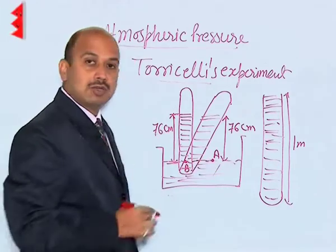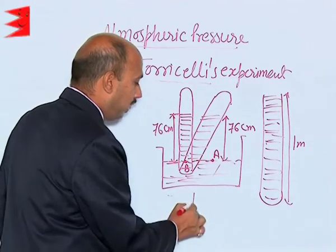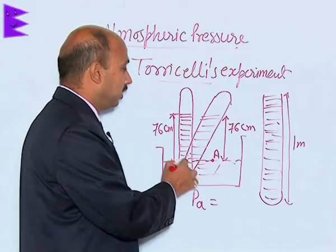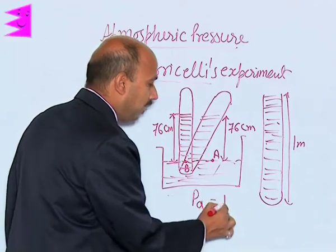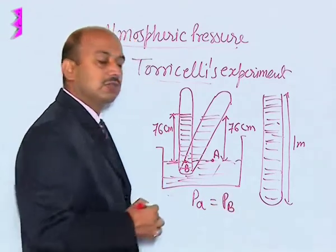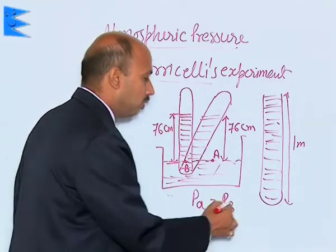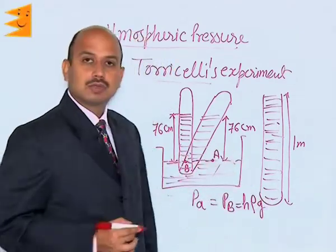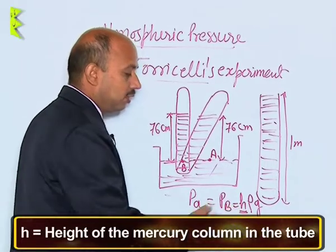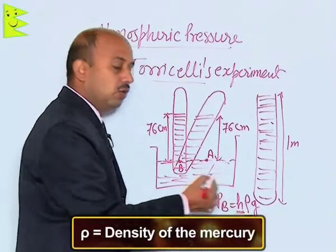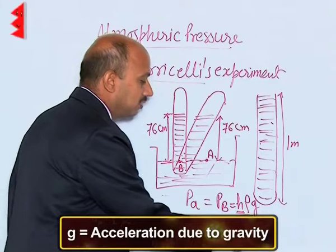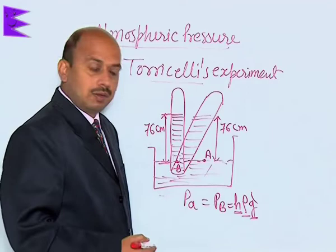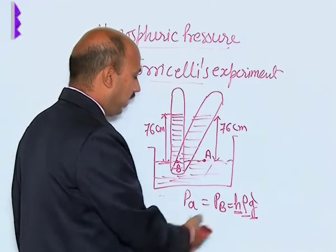At point A there is atmospheric pressure, and at point B there is pressure due to the mercury column of that height. So whatever pressure exists at point B is due to the height of the mercury column, and it can be written as h·ρ·g, where h is the height of the mercury column, ρ is the density of mercury, and g is the acceleration due to gravity. We can calculate this value by substituting h, ρ, and g.